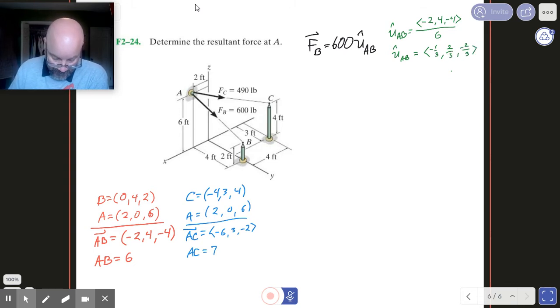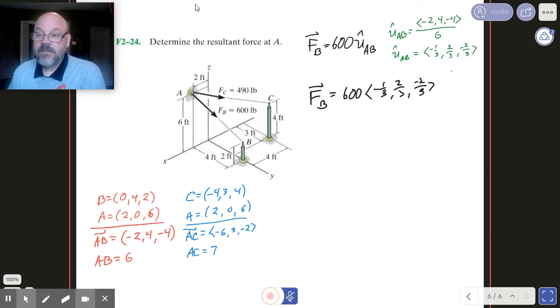So to get my FB, we're going to take our 600 and we'll pass it in to minus 1 third, 2 thirds, and minus 2 thirds. Just like that. And so what we end up getting for FB then is minus 200, 400, and minus 400. So there is FB.